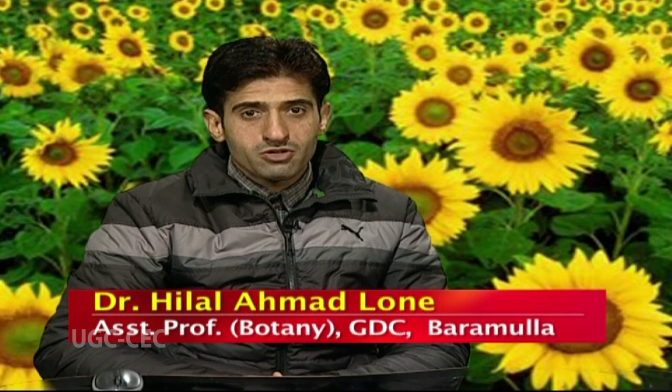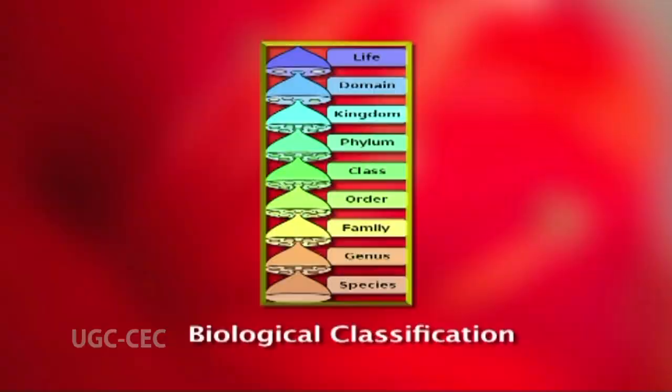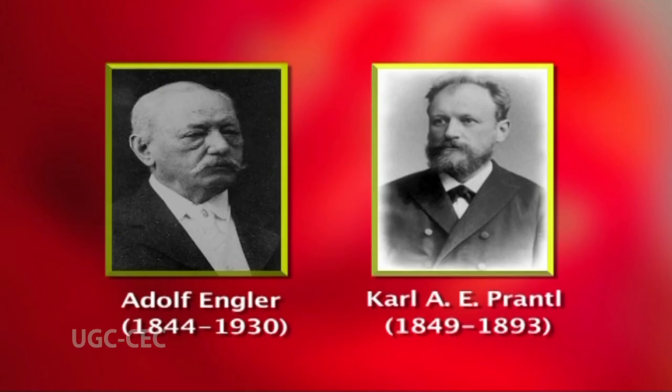Dear students, welcome. Today we are here to discuss the salient features of classification by Engler and Prantl. First, the introduction: biological classification is defined as a process of giving hierarchy of categories by scientific procedure, based on features of organisms and arranging them into different groups. The need of biological classification is to study and include each organism along with its identification and habitat, and to establish relationships among different organisms.